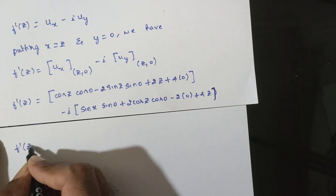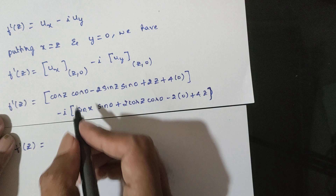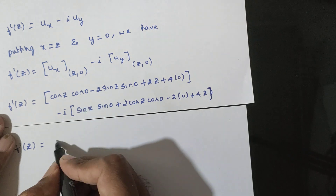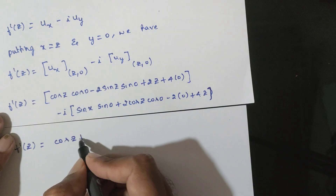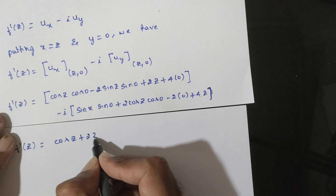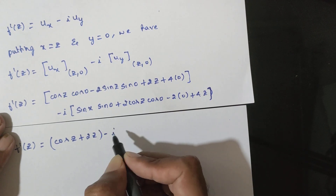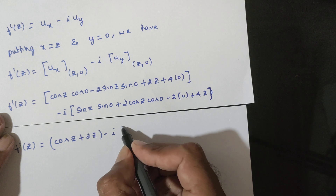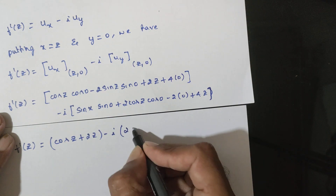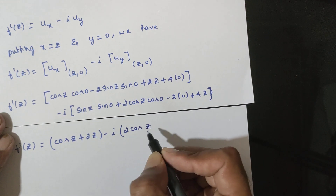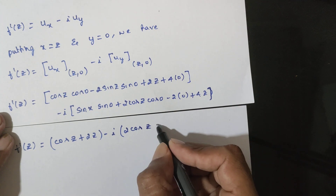Therefore f'(z) = cosz + 2z + 4 - i·(2cosz + 4z). Now we integrate to find f(z): integrating cosz gives sinz, integrating 2z gives z², integrating 4z gives 2z².